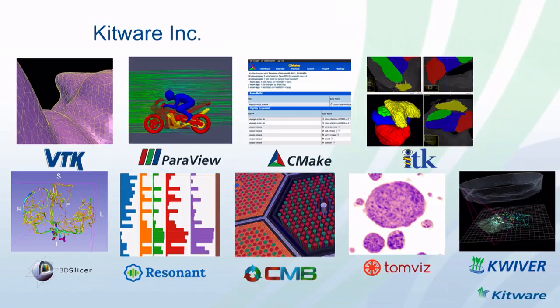CMake — you heard this mentioned in last night's talk. This is a build tool, or rather the configuration step before the actual build happens. It figures out where each library is located on your system and builds the makefile for building your C++ application. ITK is the image segmentation and registration toolkit, used in the medical field as a library for processing medical images. 3D Slicer is a visualization application for the medical field.